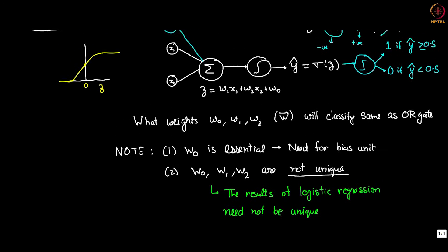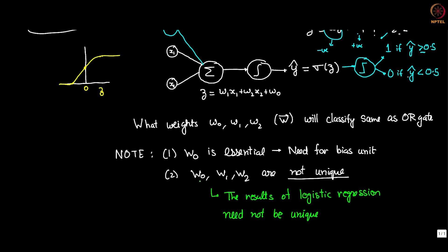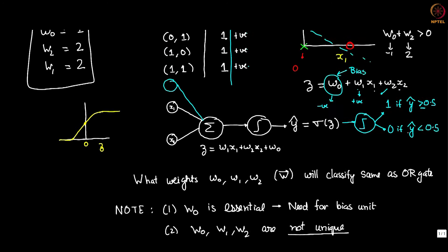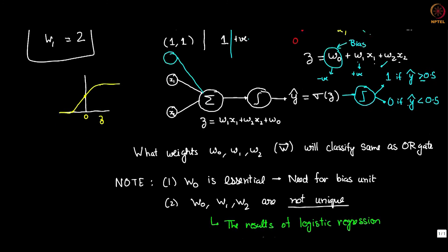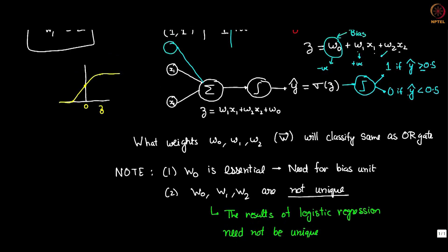Also this lack of uniqueness is due to two things. You can even multiply W0, W1, W2 by a constant and even that would not be unique, but that is a trivial sort of non-uniqueness. More actual sort of non-uniqueness is the fact that this line can move back and forth. It can also be translated as well as rotated a little bit and still the classification will work. So these two are important points for us to notice.